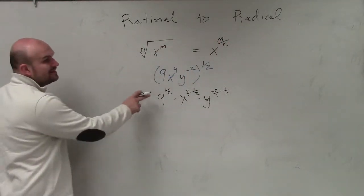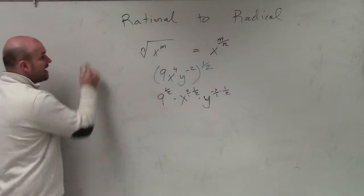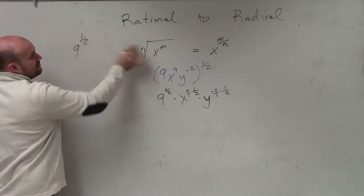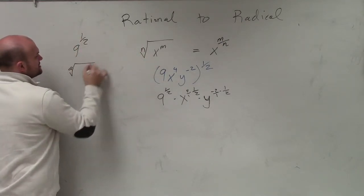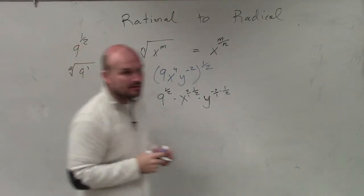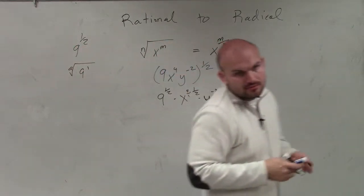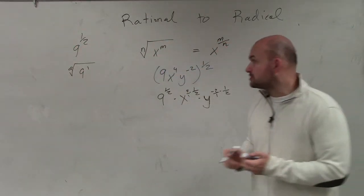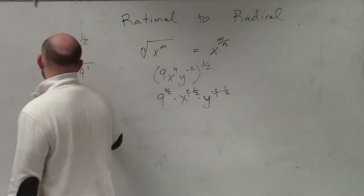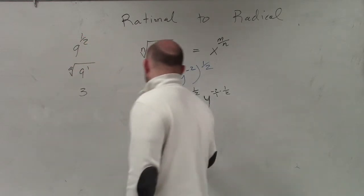Now, 9 to the 1/2 — hopefully you guys understand that 9 to the 1/2 is the same thing as the square root of 9 to the first power, right? Well, we should know the square root of 9 to the first power, which is just going to be 3.